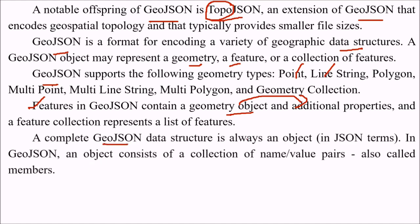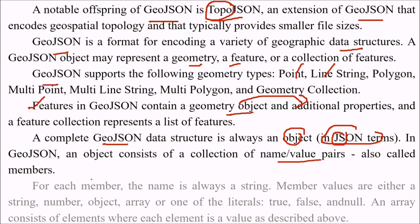A complete GeoJSON data structure is always an object, since JavaScript Object Notation is object-based. In GeoJSON, an object consists of a collection of name-value pairs, also called members.